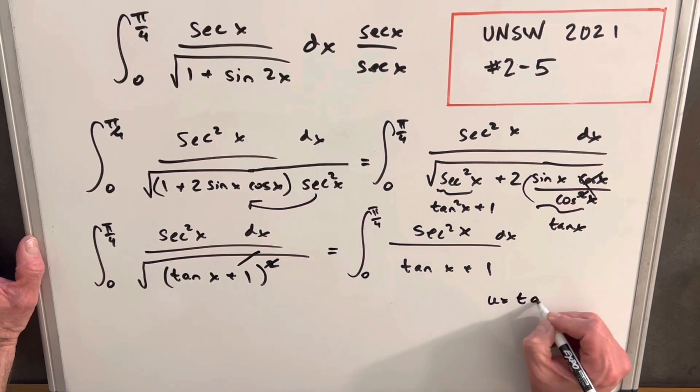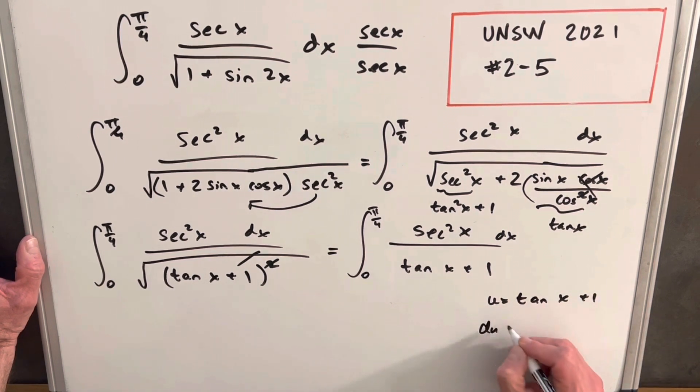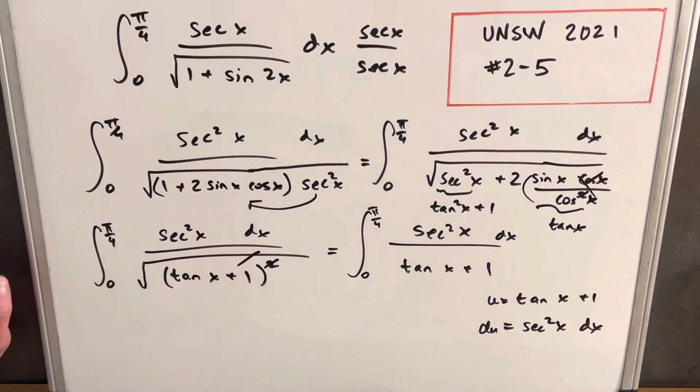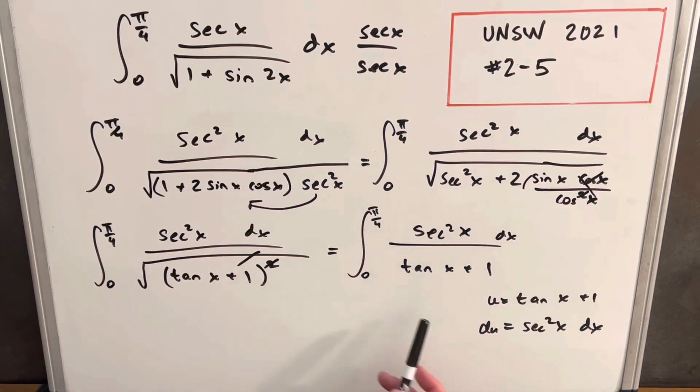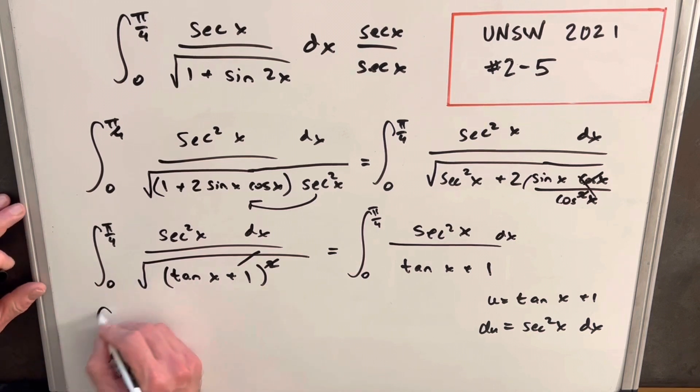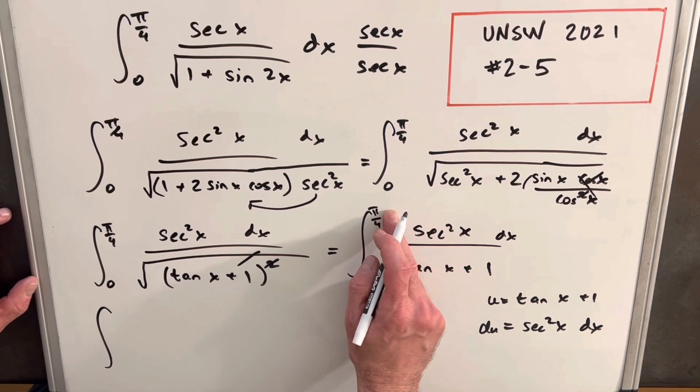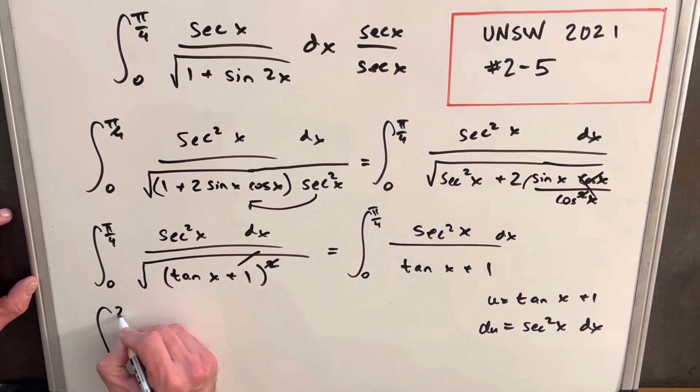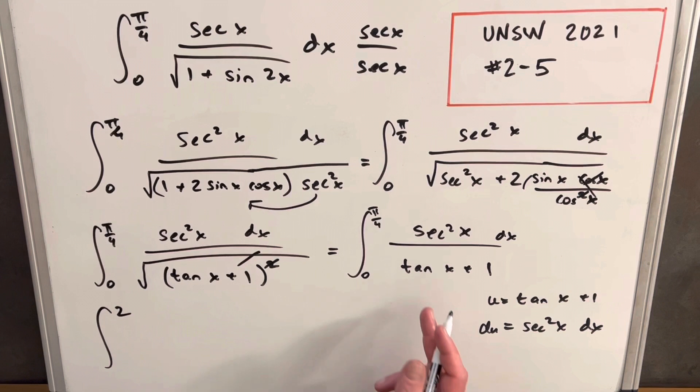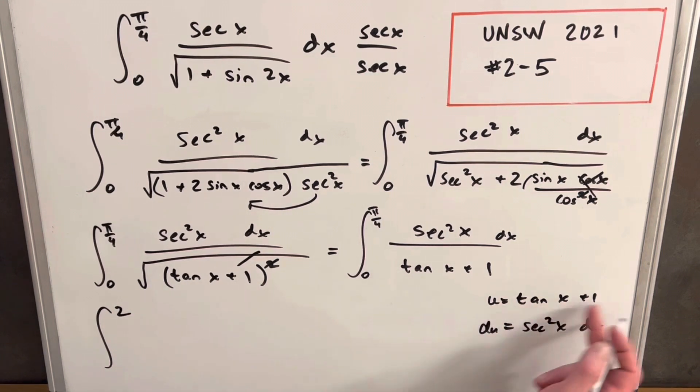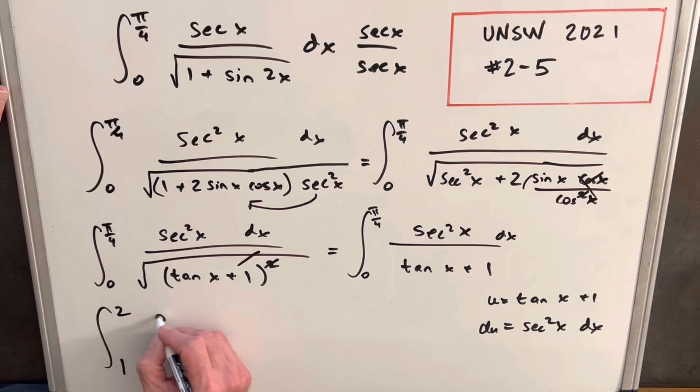So for this substitution, our u is going to be tan x plus one. And then our du is going to be secant squared x dx. So then we have our du in the numerator, u in the denominator, so we're in pretty good shape. Let's update our bounds first. Rewriting, making our substitution, tan at pi over four is going to be one. One plus one, so we're going to have two. And then tan at zero is going to be zero plus one. So we're just evaluating this from one to two.